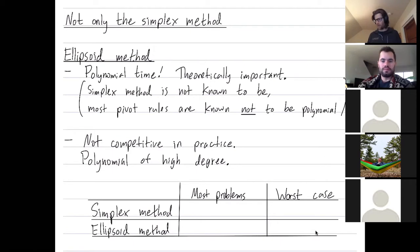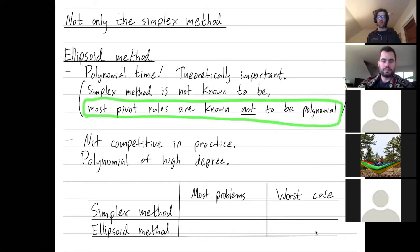I sort of doubt that. Most pivot rules, including the ones we've discussed, are known to not be polynomial time. They require exponential time in the worst case.